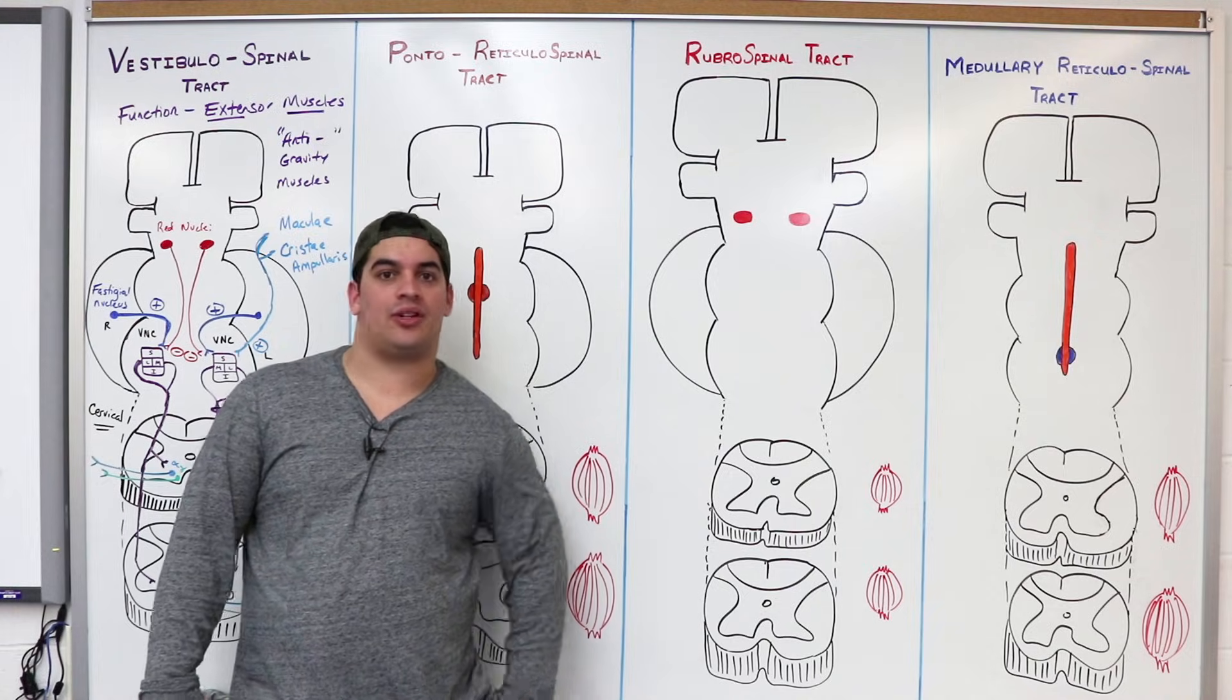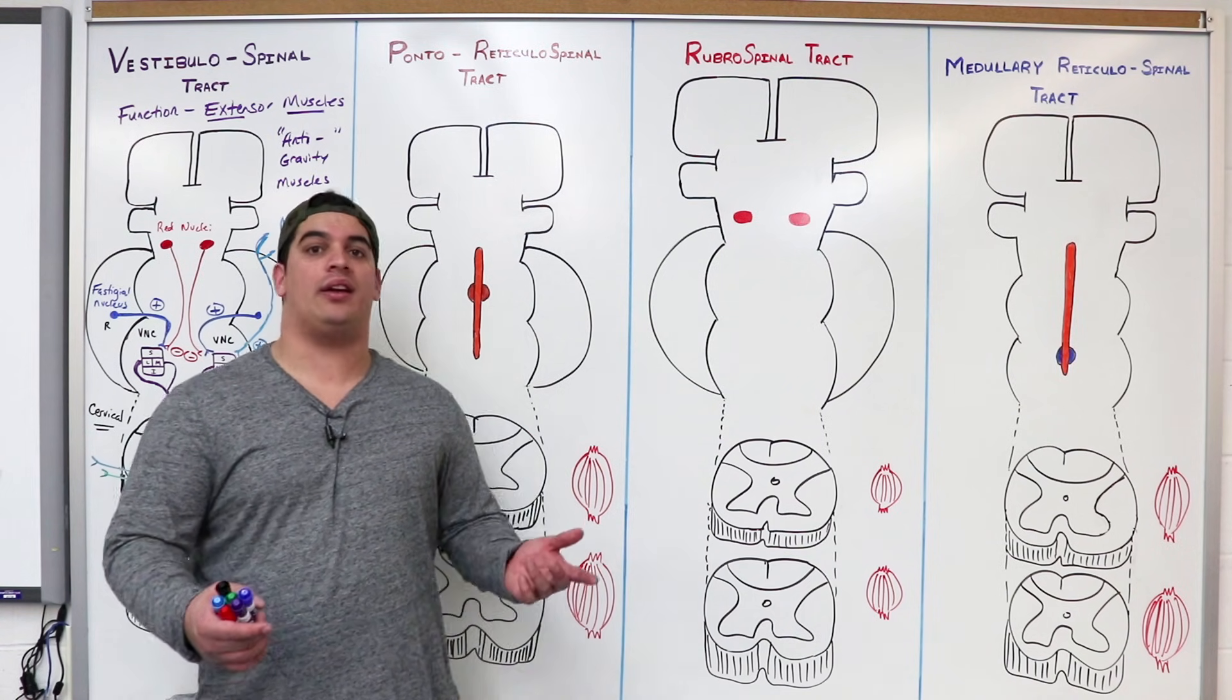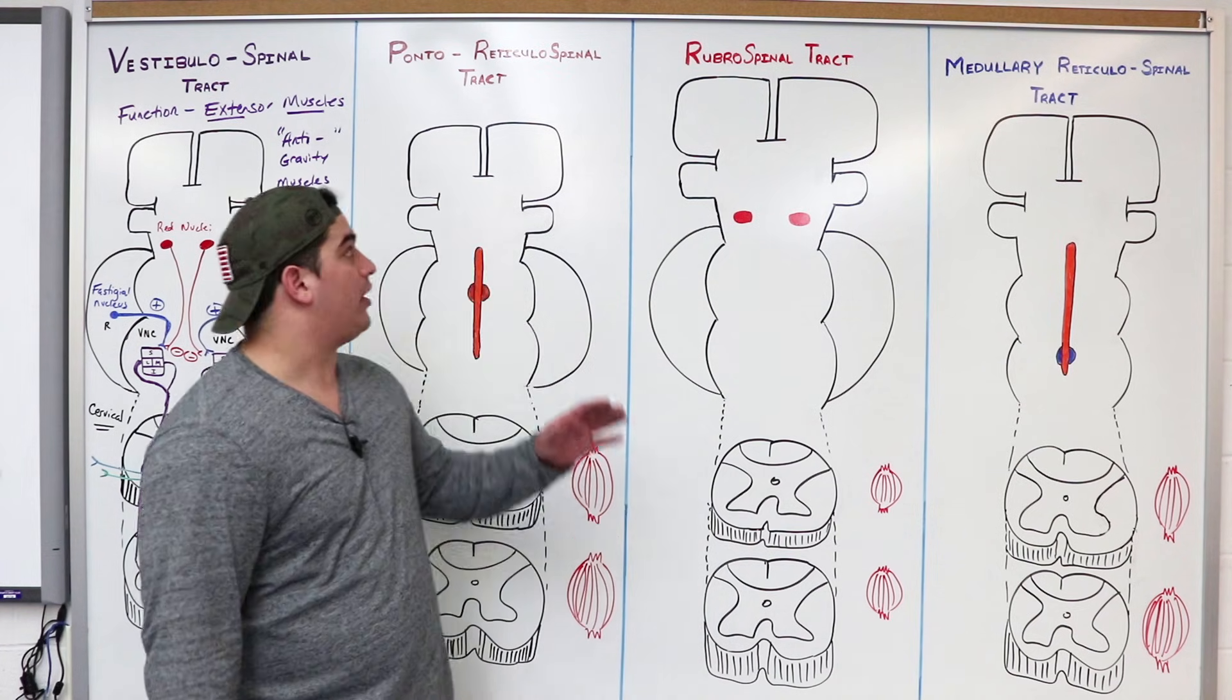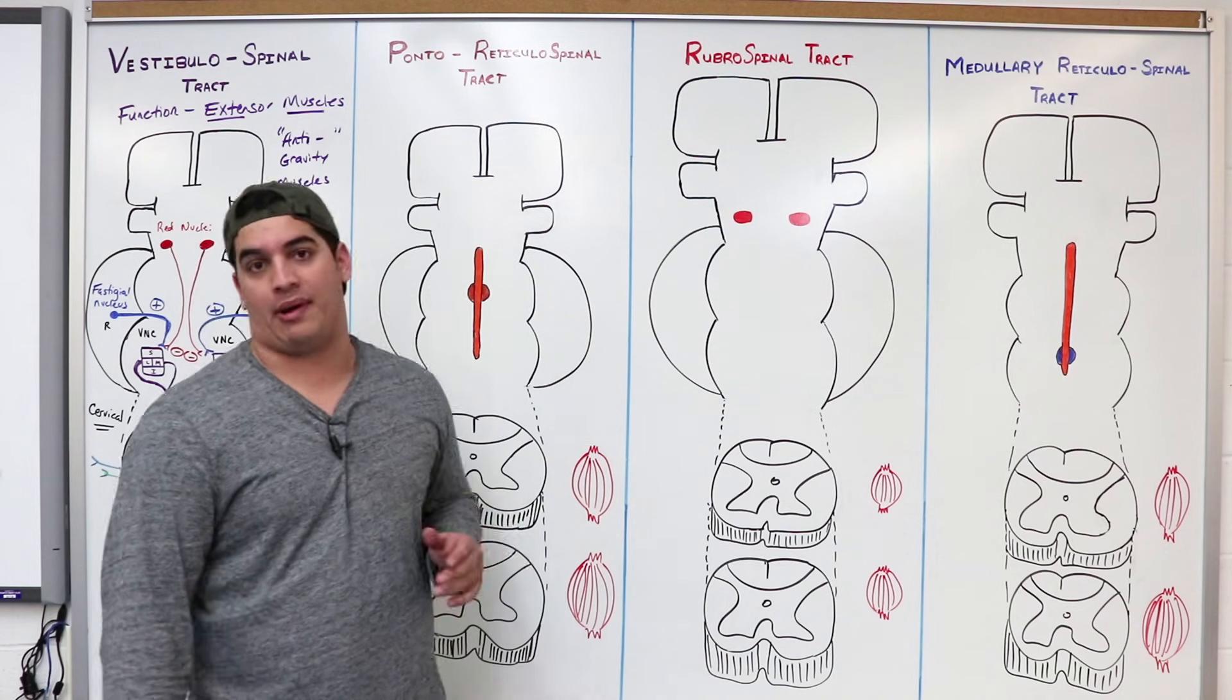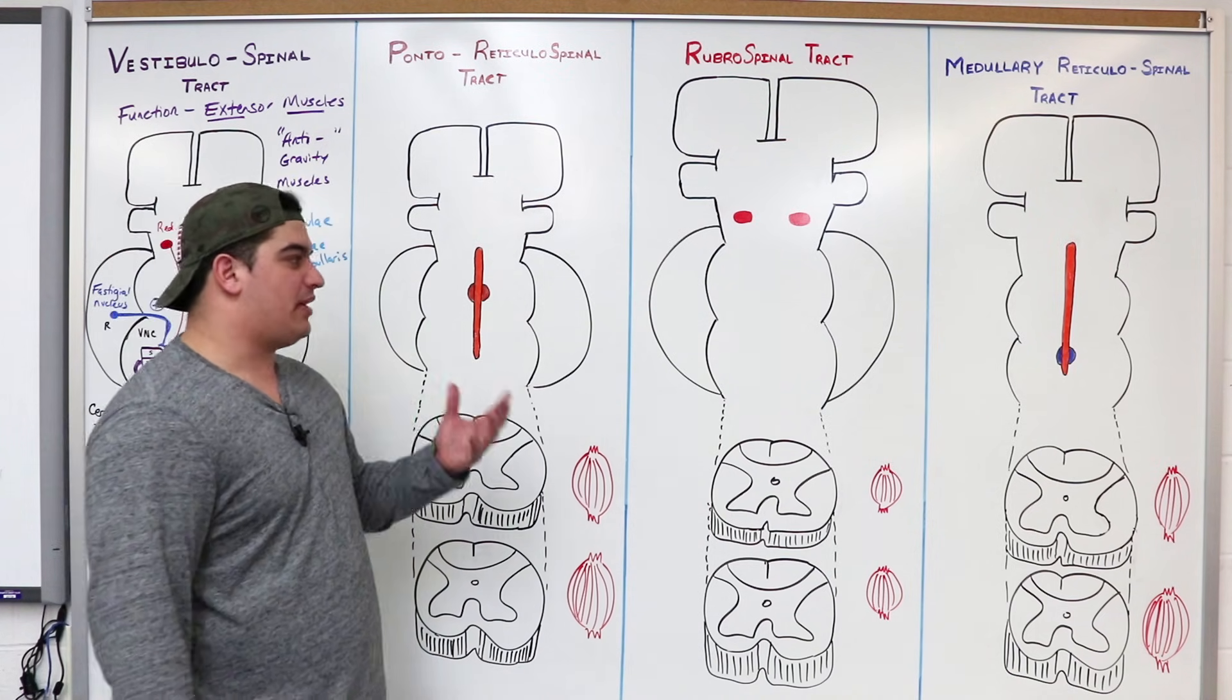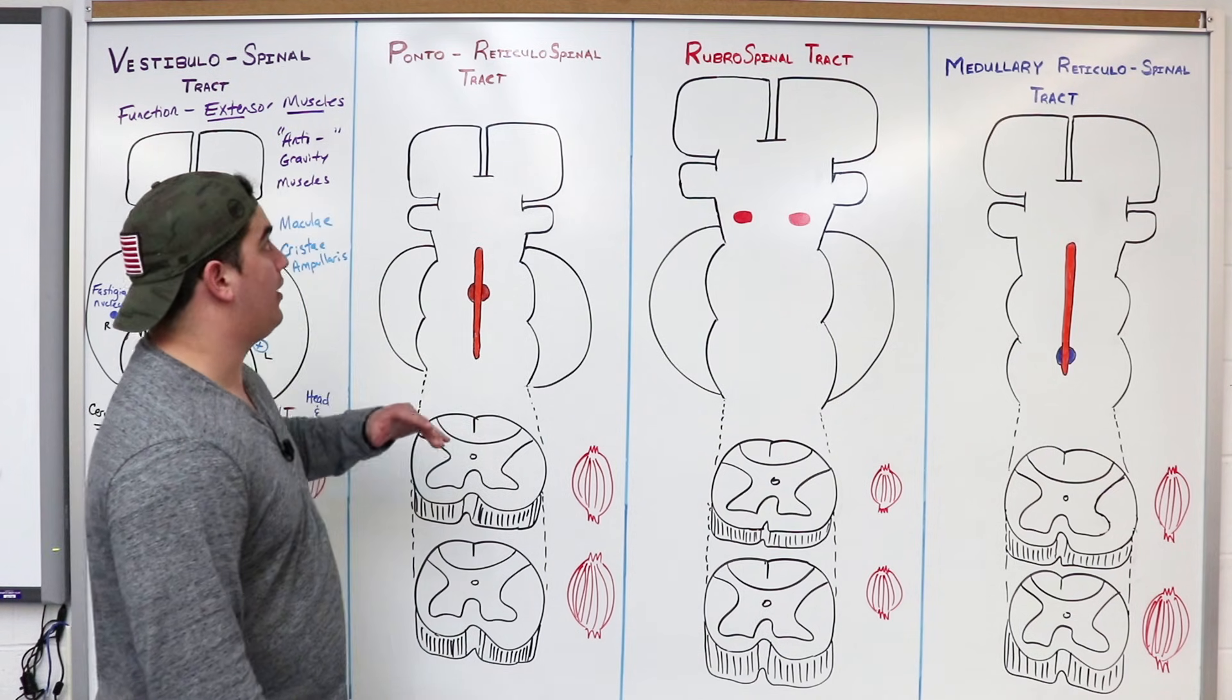Alright Ninja Nerds, let's continue our discussion on this four-part series on the descending tracts. If you guys haven't already seen it, go watch the video on the vestibulospinal tract. In this video, we're going to focus on the Ponto-Reticulospinal tract. Now you guys are going to like this because I have these guys set up in a specific order to where we can remember them easy. We'll talk about it towards the end.